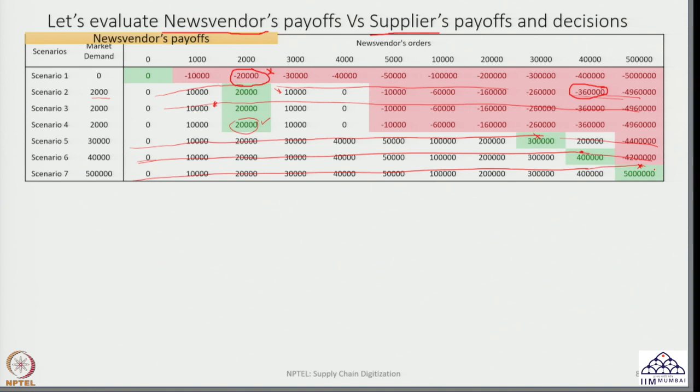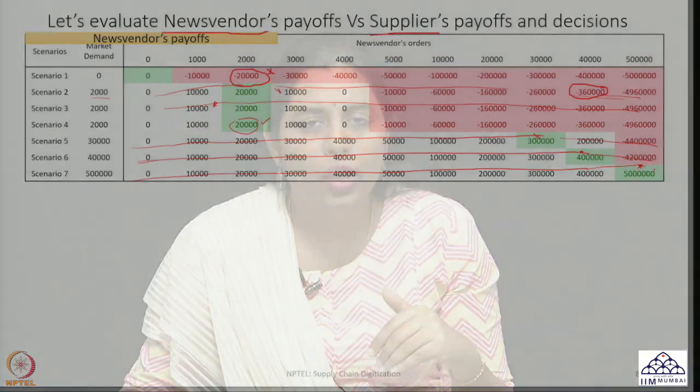Remember, the news vendor is the primary entity which takes the decision because the news vendor is the one distributing to the market and therefore takes the decision as to how much to order. This is not necessarily always the case — it can also be possible that the supplier takes decisions on behalf of the news vendor. But here we are assuming the news vendor has knowledge of market demand, while the supplier only knows the order size being placed. So what we can do is see what is the impact of the news vendor's decisions on the payoffs of the supplier.